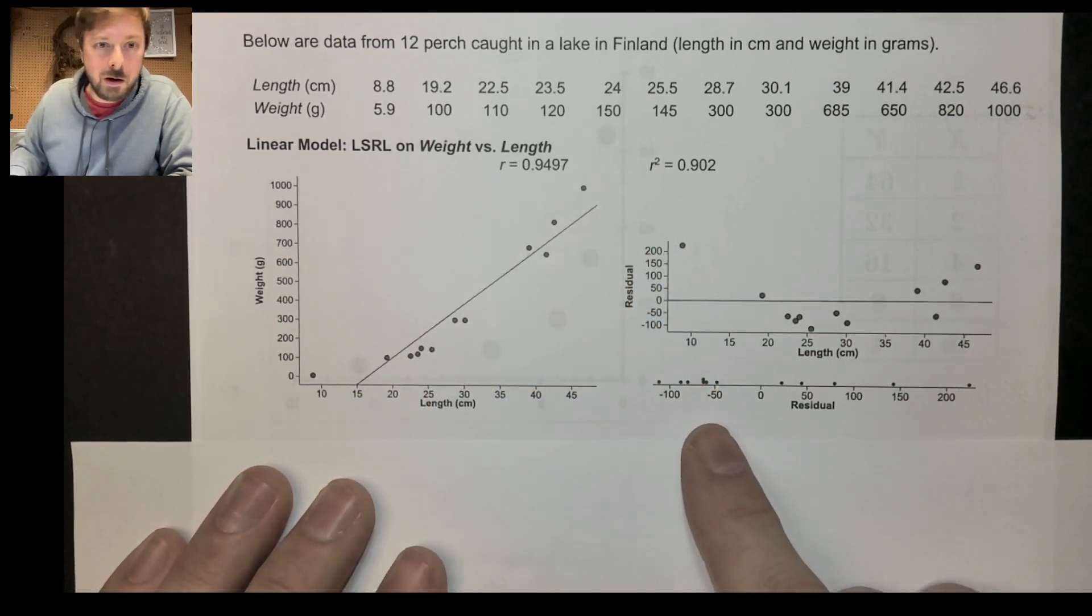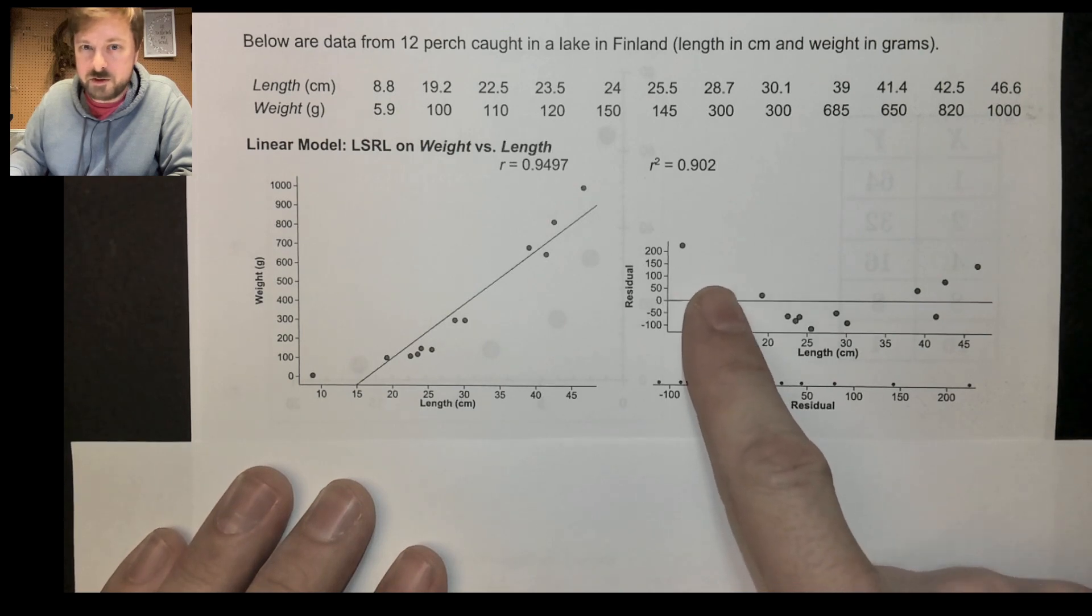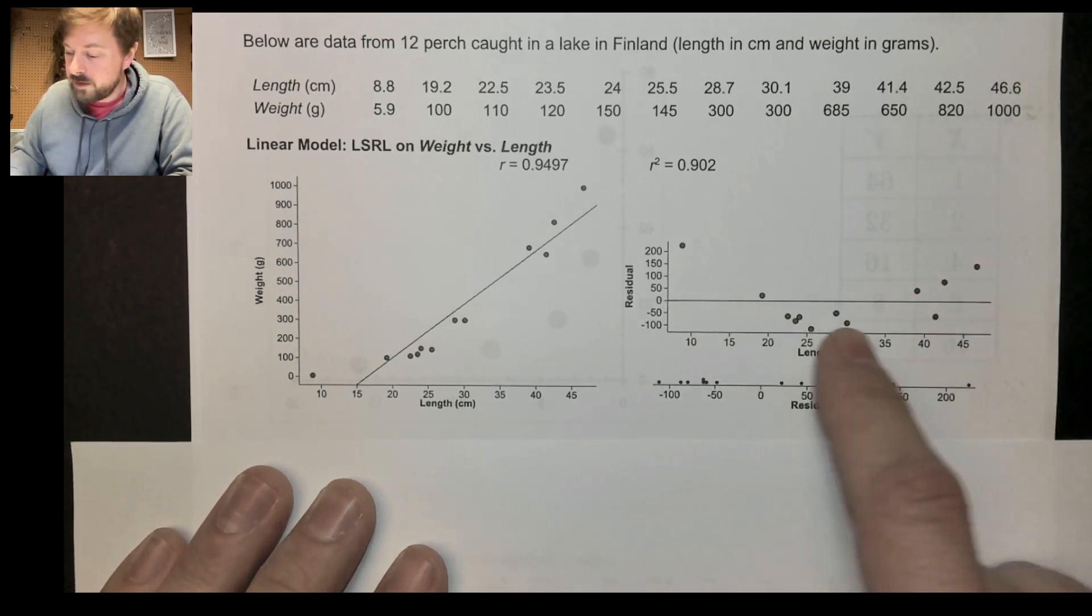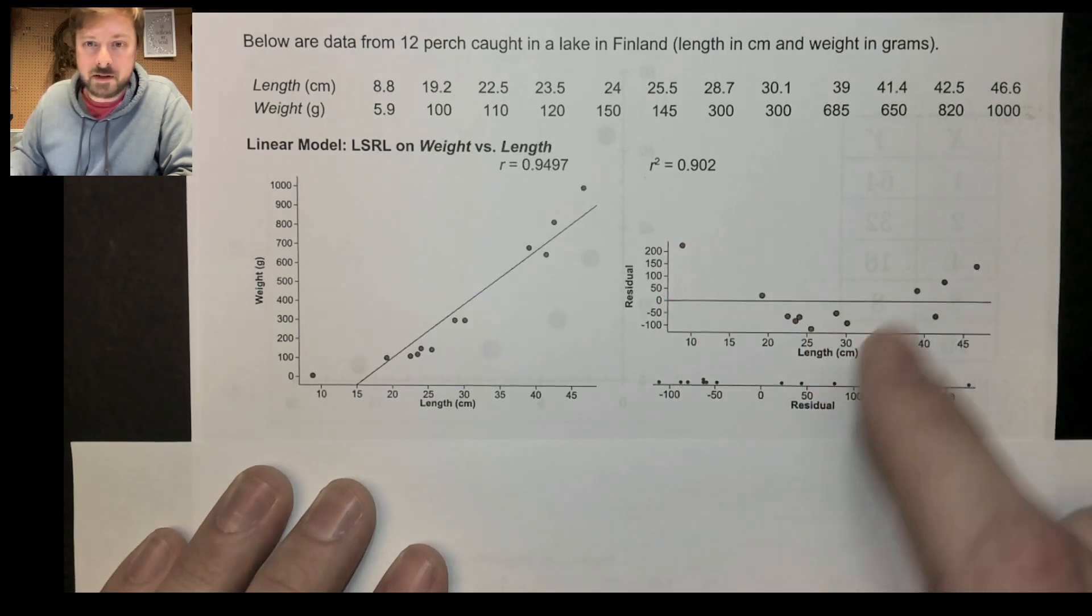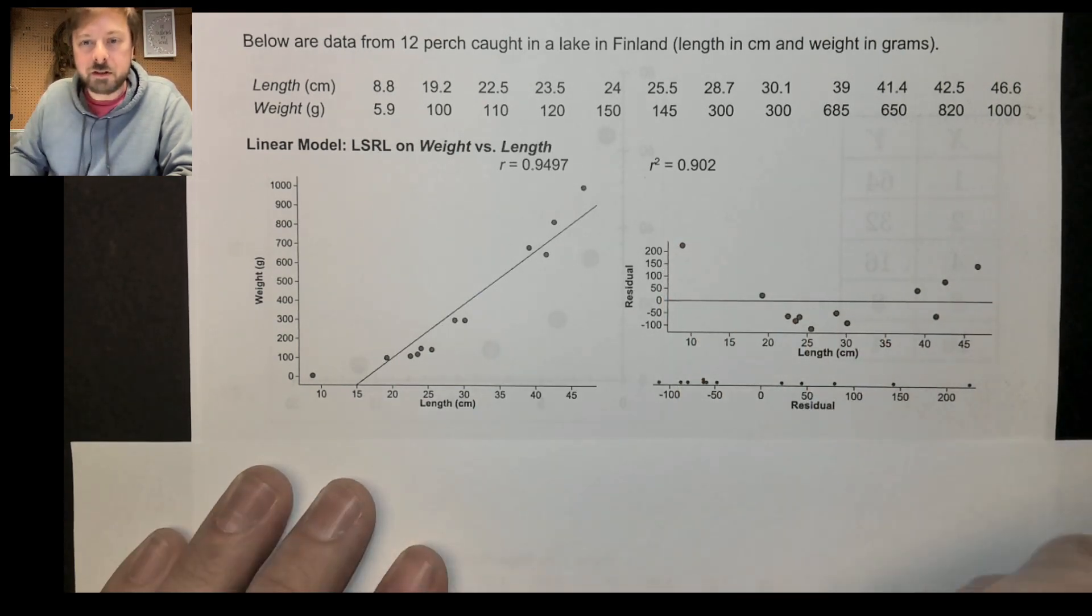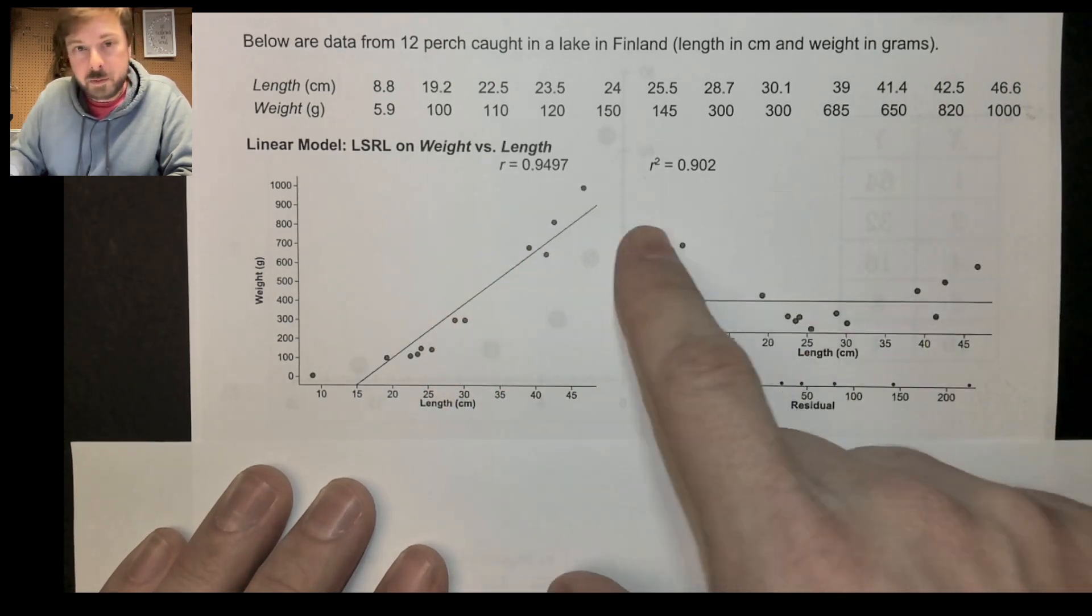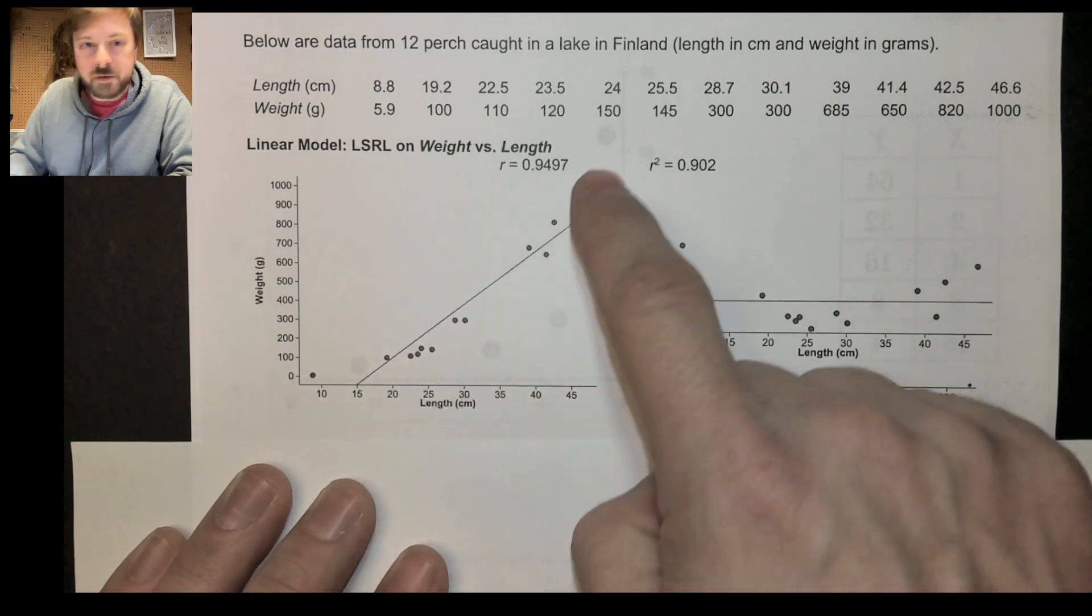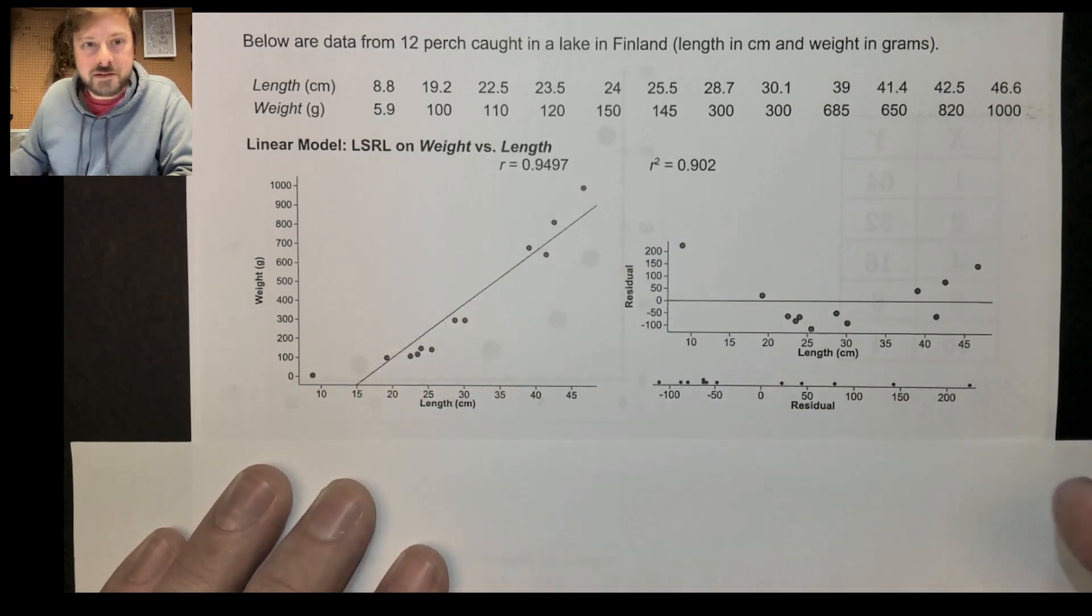However, is the form of that relationship really linear? No, no. Look, look at our residual plot: positive, negative, positive. We don't actually have a linear relationship between the weight of these perch and the length. So, ooh, that looks all curvy. Well, what if it's exponential?